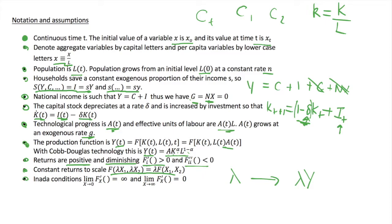We also have the Inada conditions, which say that as an input x goes to zero, its marginal return is infinite. This is illustrated in a Cobb-Douglas production function: if labour goes to zero, output goes to zero, and increasing labour to something positive yields an infinite marginal return. Conversely, as an input goes to infinity, its marginal return goes to zero — because of diminishing returns. So as we have infinite labour, adding a bit more labour gives zero returns.